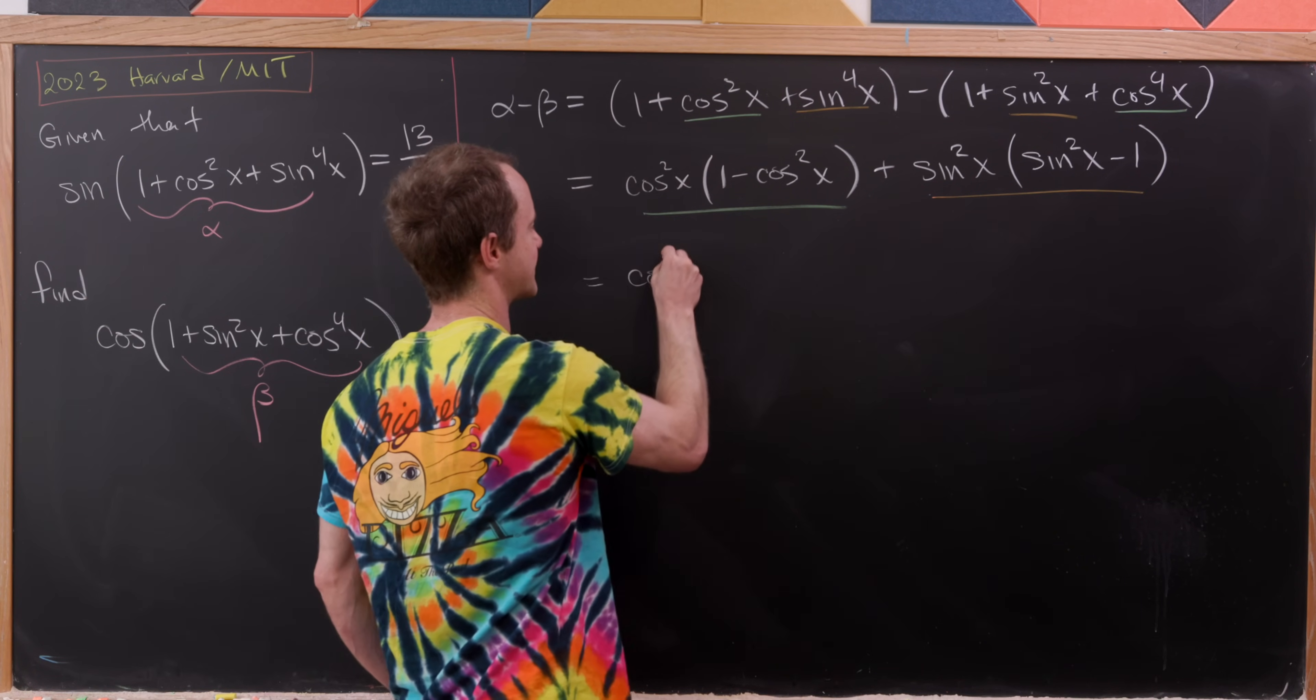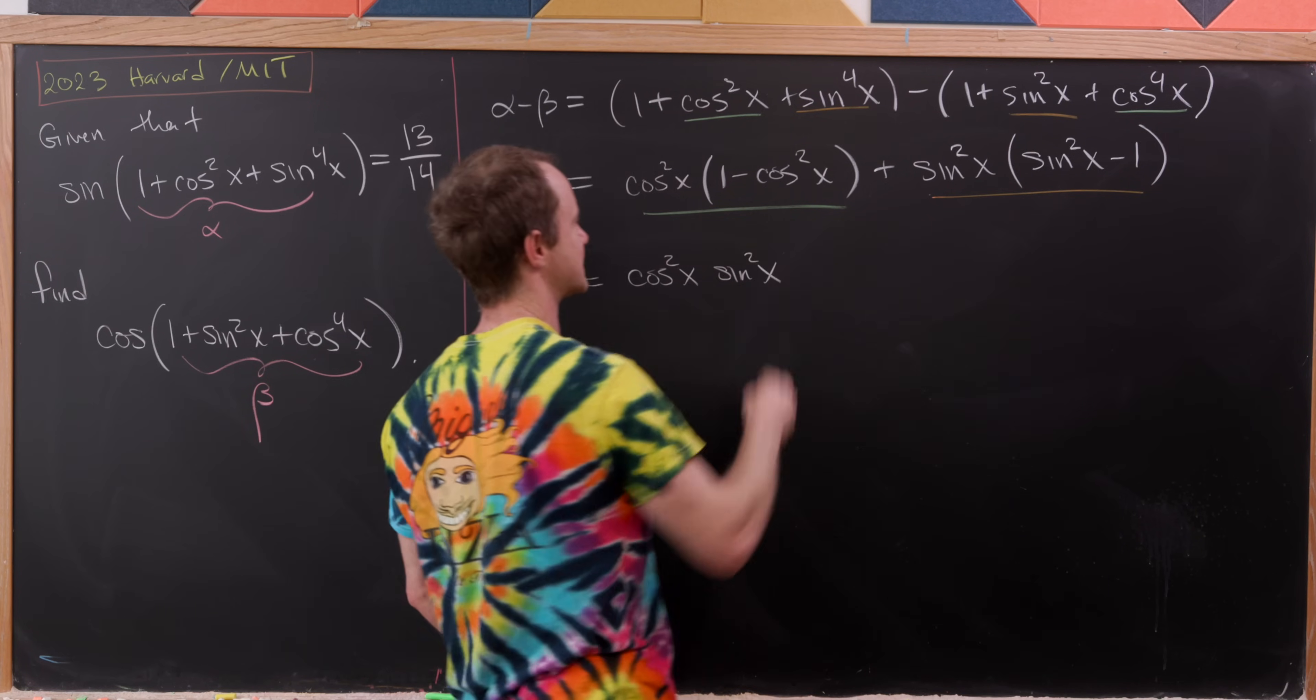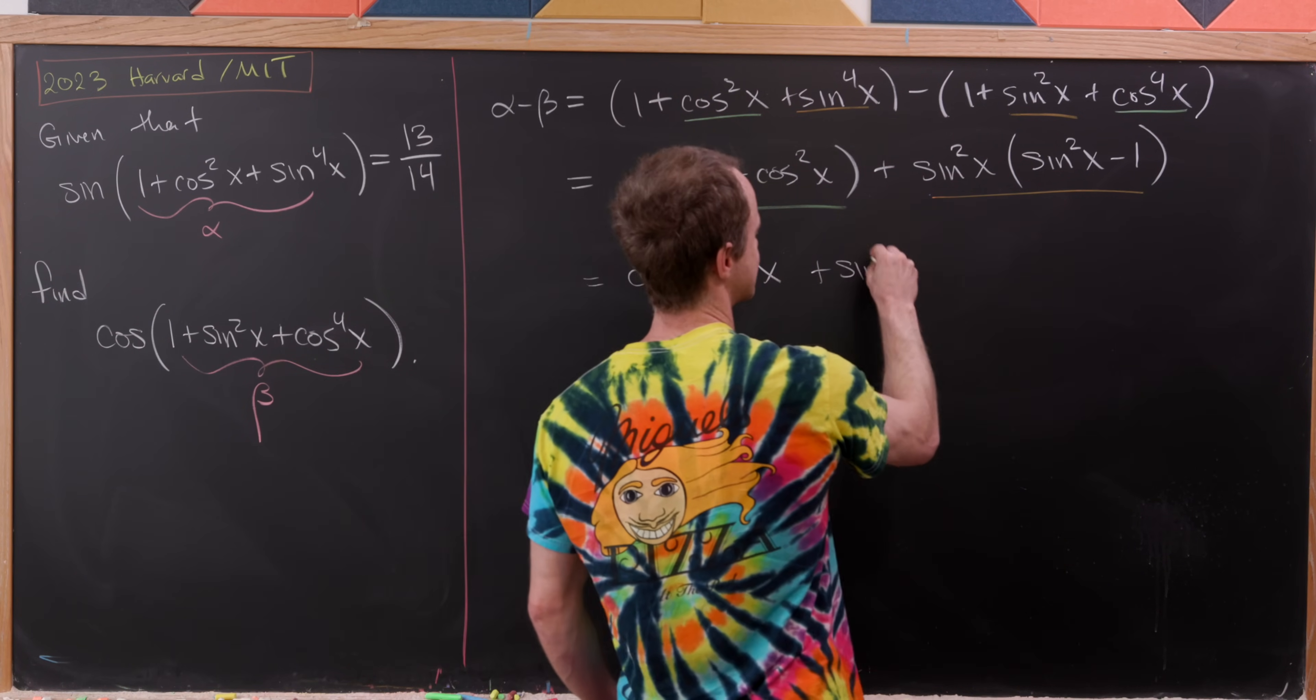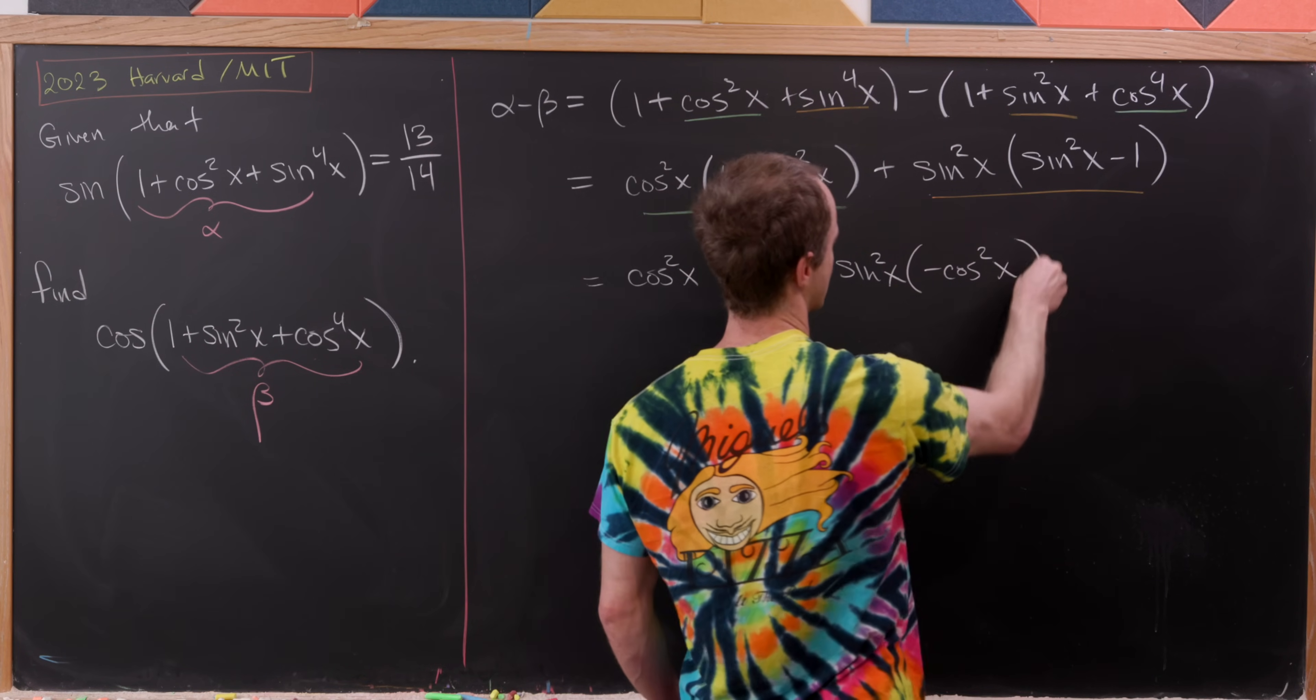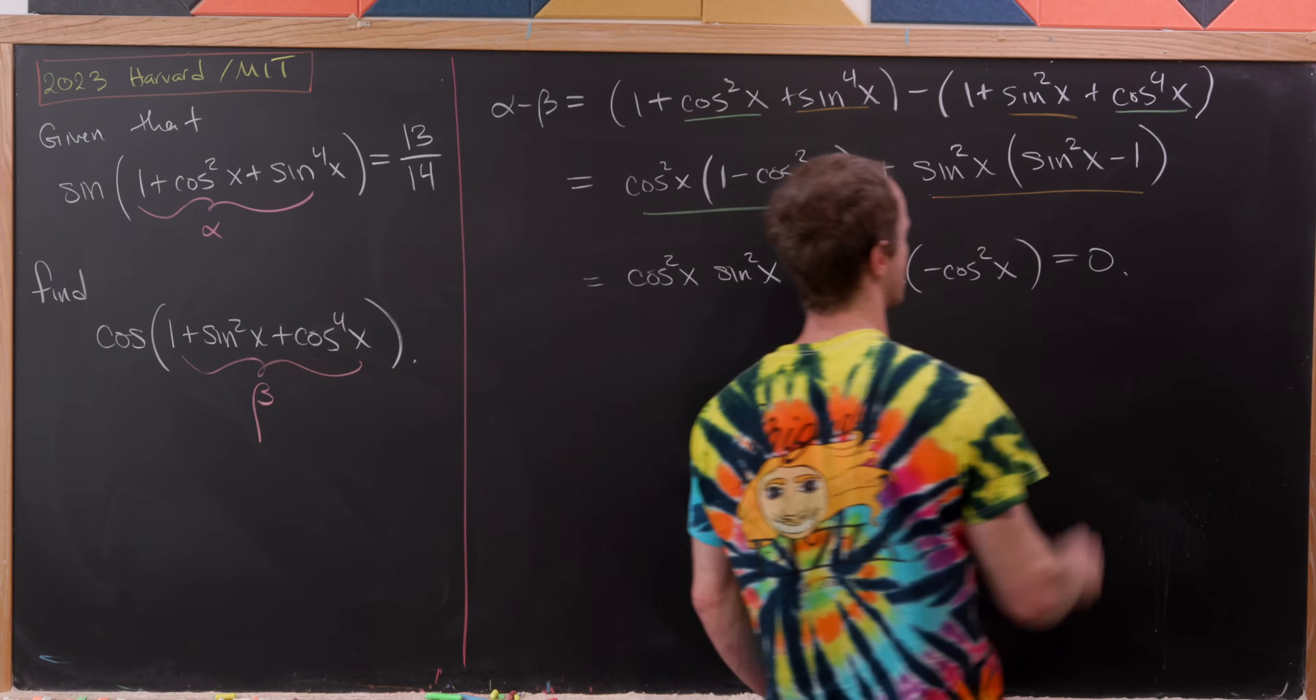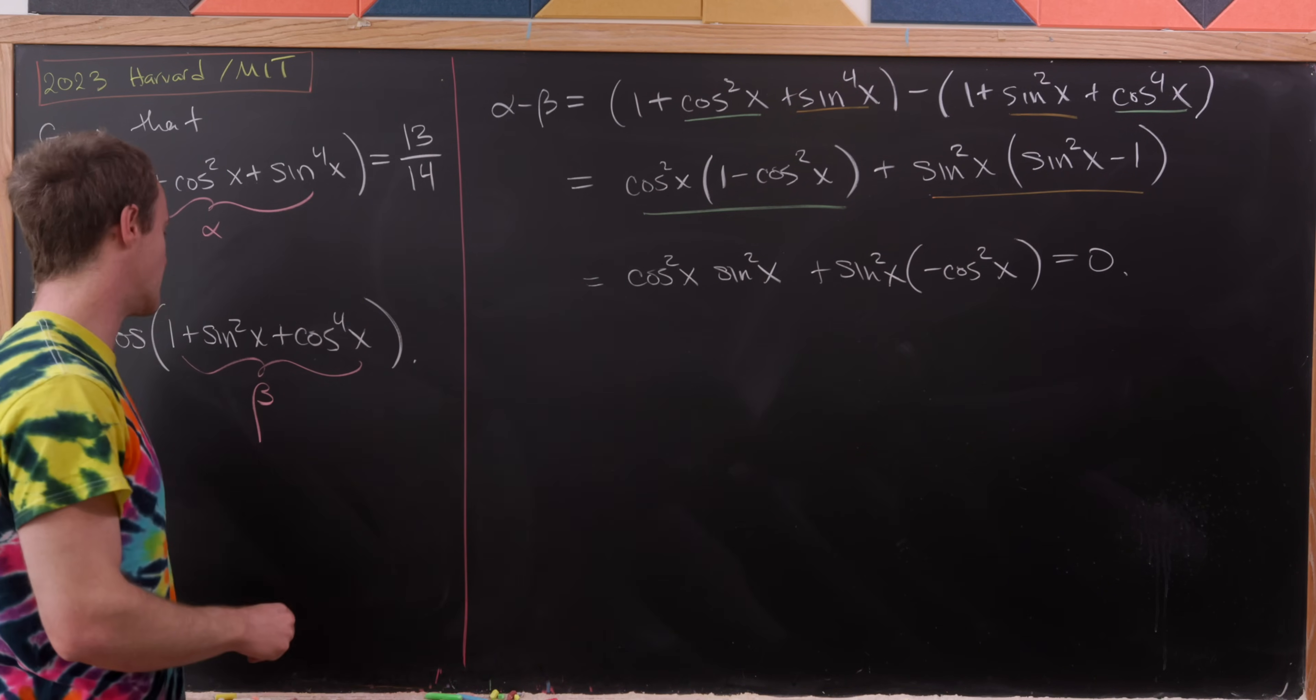Let's observe that this first one is cos²x·sin²x, because of course we know 1 - cos²x = sin²x. And then we have plus sin²x times negative cos²x for essentially the same reason. But notice that the difference here is zero. So that means alpha is in fact equal to beta.